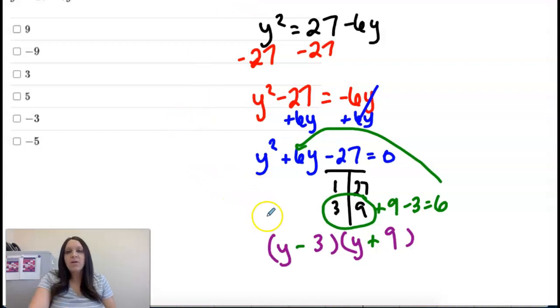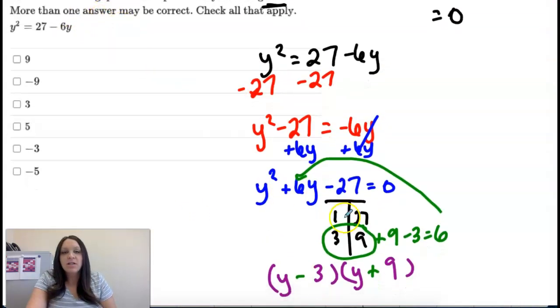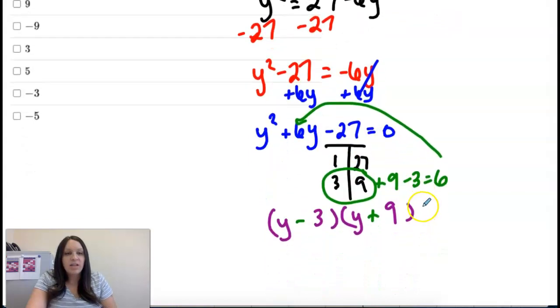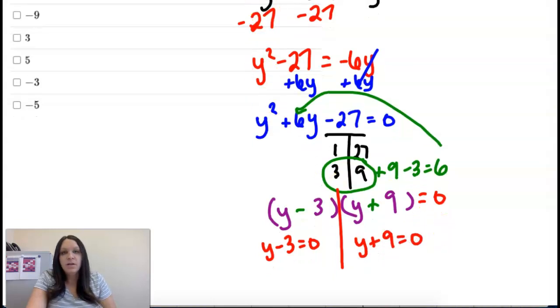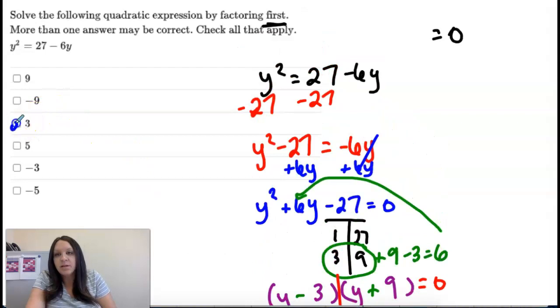So the way we use factoring to get to our answers, solving both of these, we get 3 and negative 9. So these are my answers by factoring.